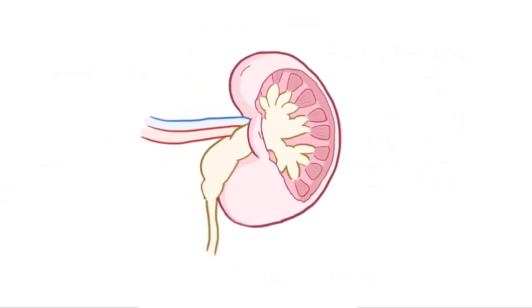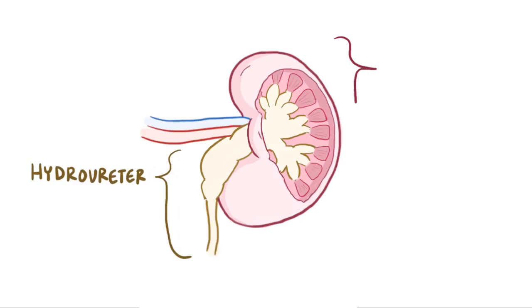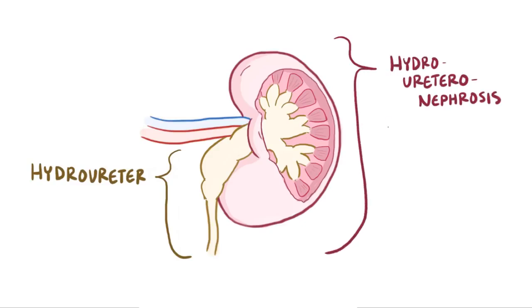If there's dilation of just the ureter, it's called hydroureter. But if there's dilation of the ureter, renal pelvis, and the calyces, it's called hydroureteronephrosis, or more commonly just hydronephrosis.